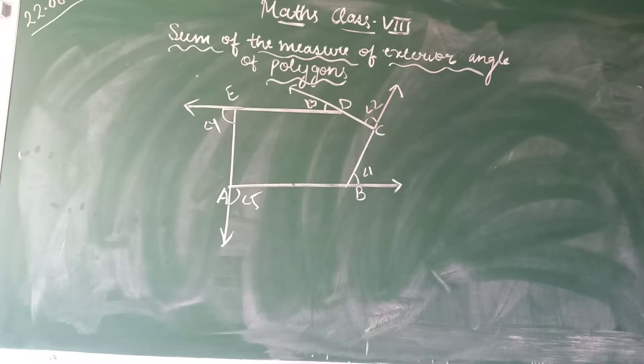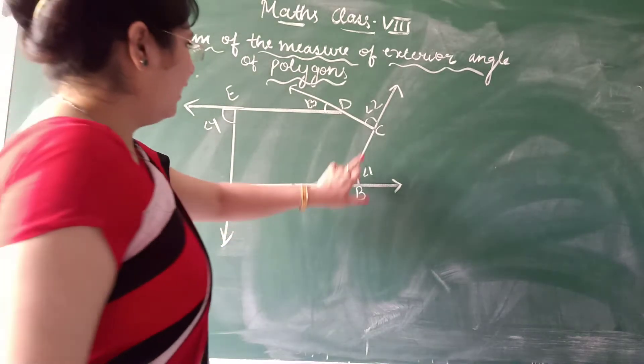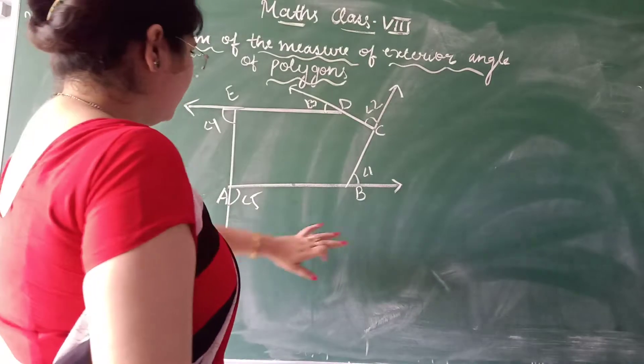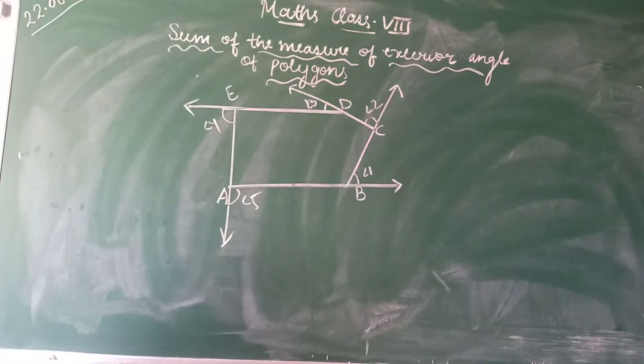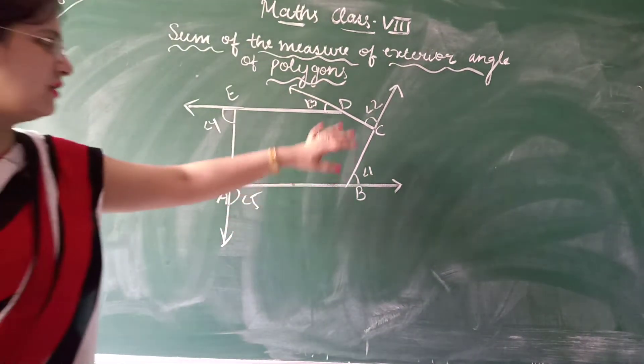So angle 1, angle 2, angle 3, angle 4 and angle 5 are exterior angles. These all are the exterior angles and we need to find the sum of the measurement of all these exterior angles.